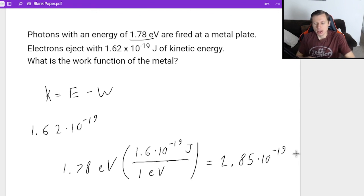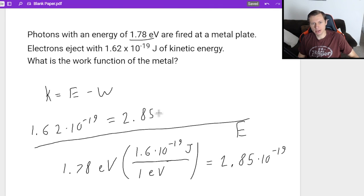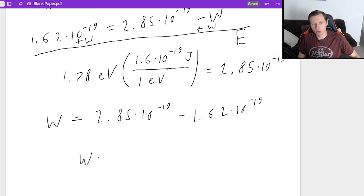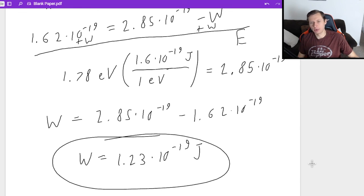That is my energy of the photon. It's e. So then 1.62 times 10 to the minus 19th equals e, which is 2.85 times 10 to the negative 19th minus w. This one was easy. I just need to add w to both sides and then subtract the 1.62 to both sides. Now I'll get a final answer for the work function of 1.23 times 10 to the negative 19 joules. And that is the work function of this metal.